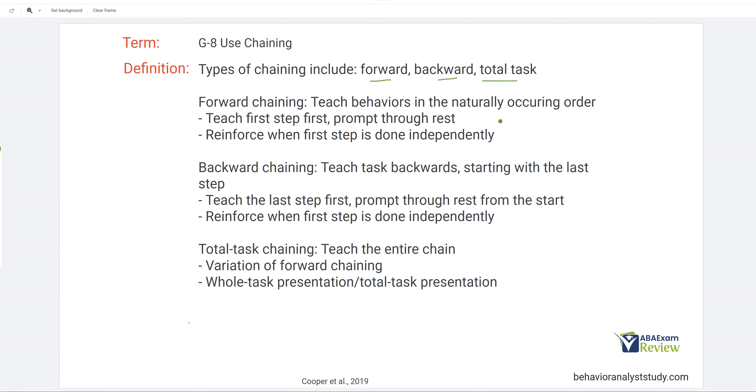So let's start with forward chaining. We're going to teach behaviors in the naturally occurring order. So let's say you want to make a sandwich. We're going to teach using forward chaining. We're going to teach making a sandwich in the naturally occurring order. Let's say you grab the bread, you grab the ingredients, and you proceed to make the sandwich. You're going to teach the first step first and prompt through the rest. And we're going to reinforce on that first step with independence. And then the next time around, we're going to reinforce for one and two.